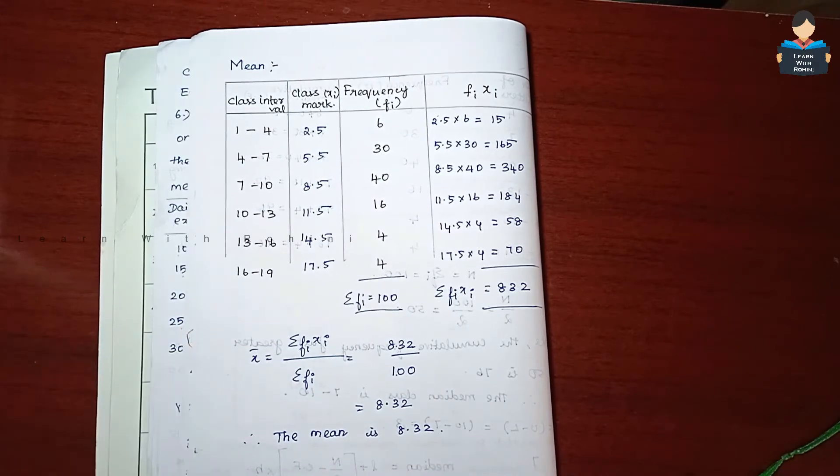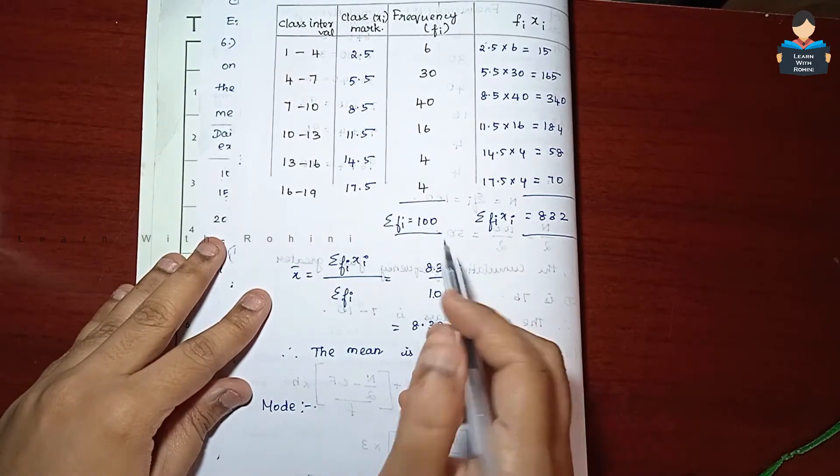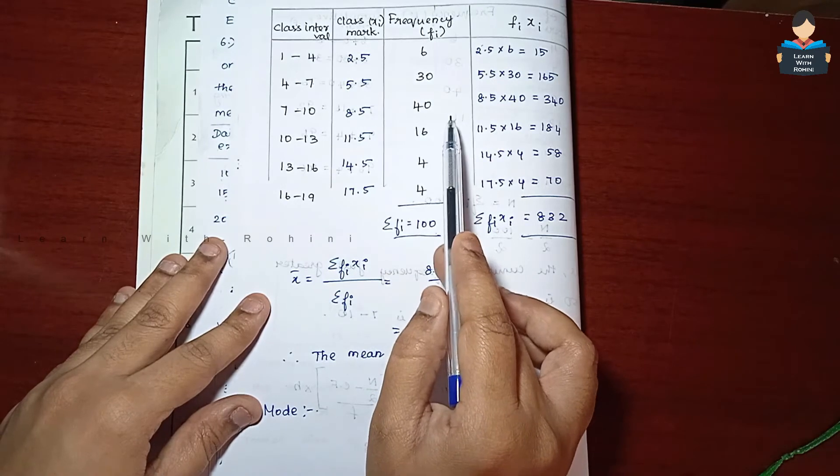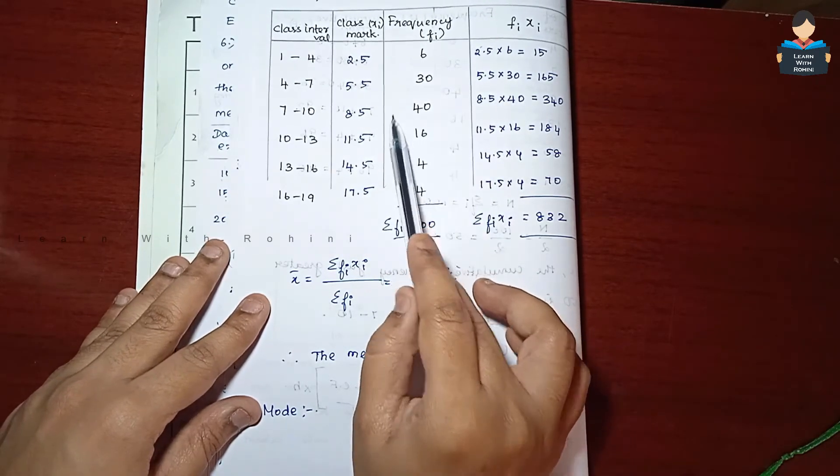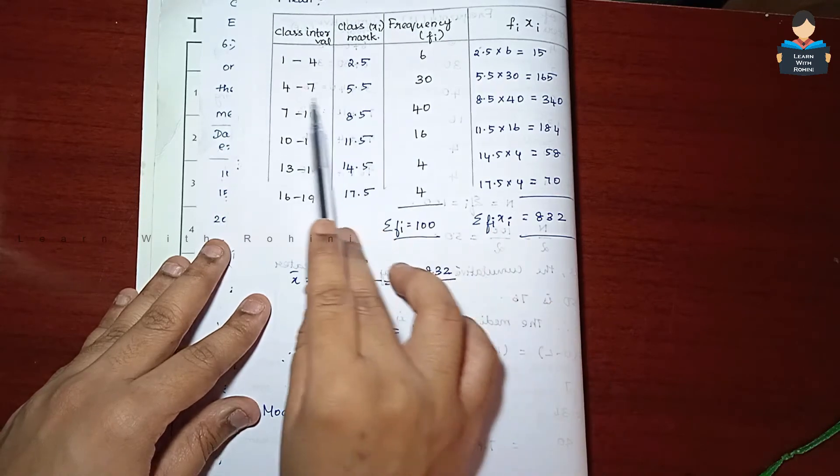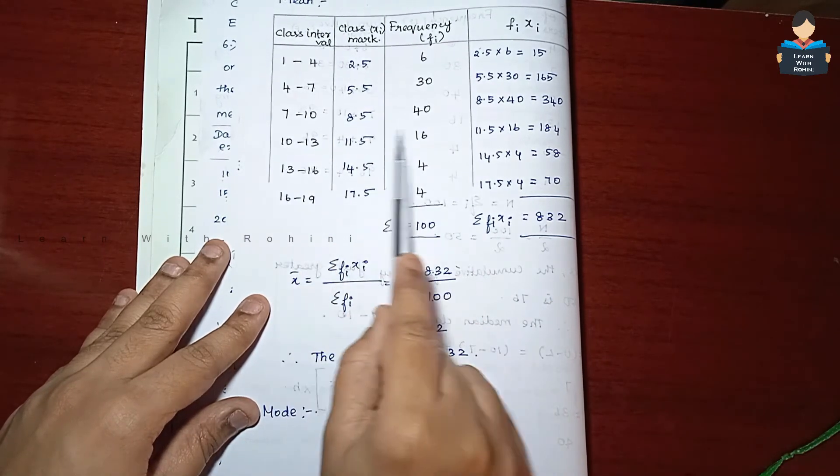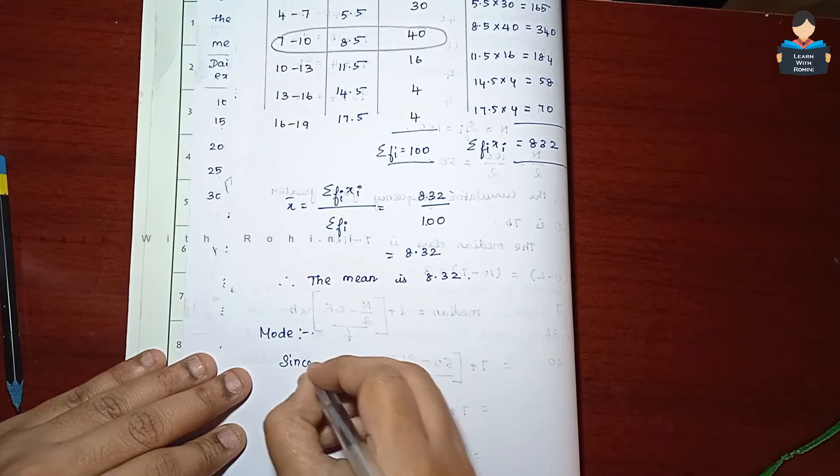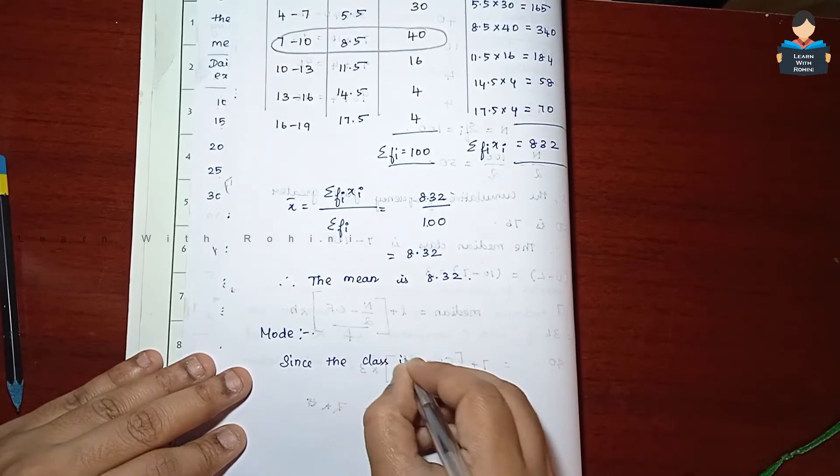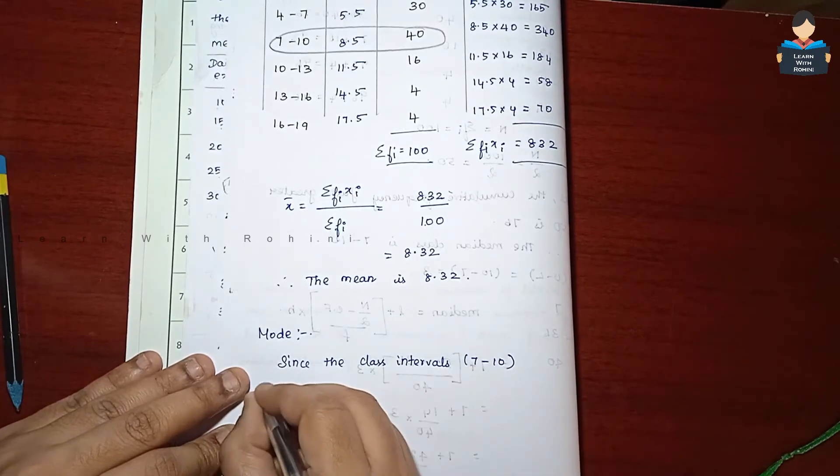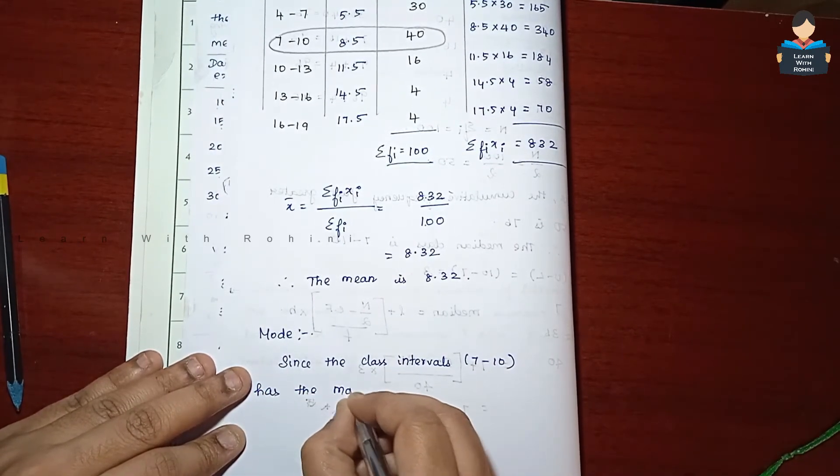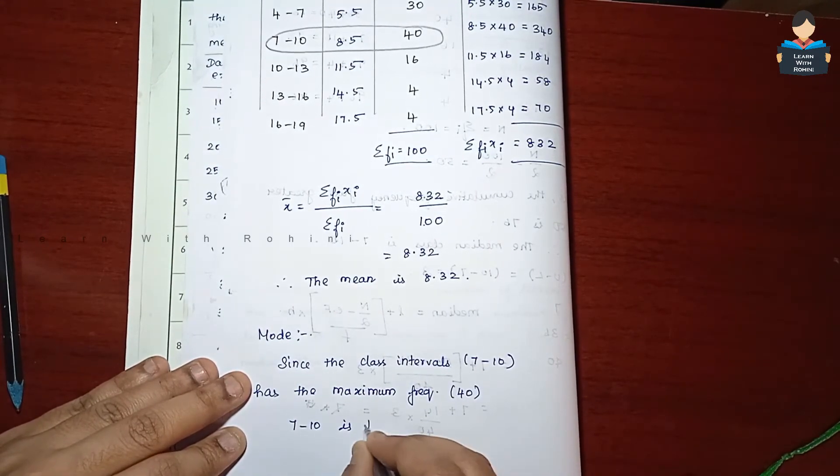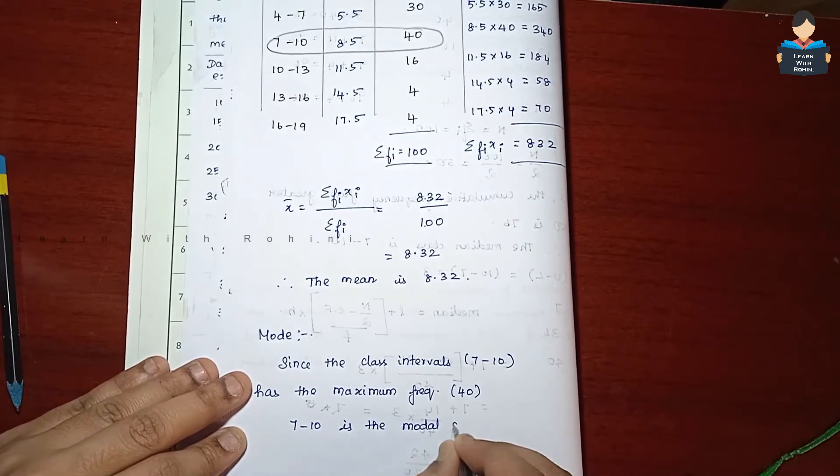Now we will find the mode. Let's see what the highest frequency value is. 40 is the highest value. So what the modal class is. This is the modal class, 7 to 10 is the modal class. Since the class interval 7 to 10 has the maximum frequency, 40, therefore 7 to 10 is the modal class.